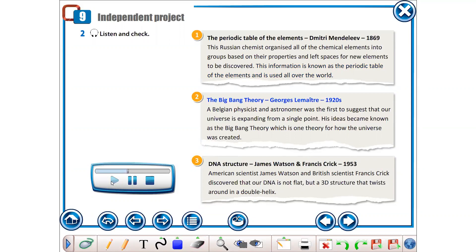The Big Bang Theory. George Lemaitre, 1920s. A Belgian physicist and astronomer was the first to suggest that our universe is expanding from a single point. His ideas became known as the Big Bang Theory, which is one theory for how the universe was created.